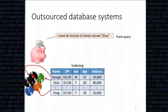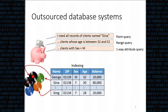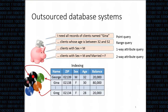This query is called a point query because we check equality and retrieve records with exactly that value. Another query, called a range query, may ask for clients whose age is between 32 and 52 years old—we find all values in that range and follow all pointers to retrieve those records. Other examples include retrieving all male clients, or all clients who are male and single.